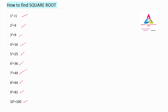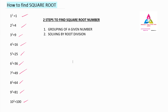If you know this much — from 1 square to 10 square — you can solve any square root number easily. To find the square root of a number, we have to follow two steps. The first step is grouping of a given number, and the second step is solving by root division.